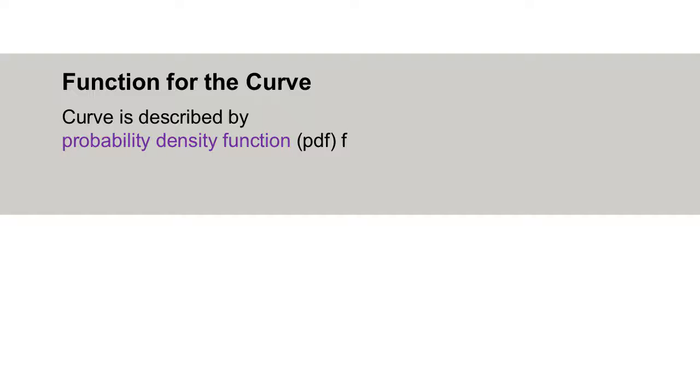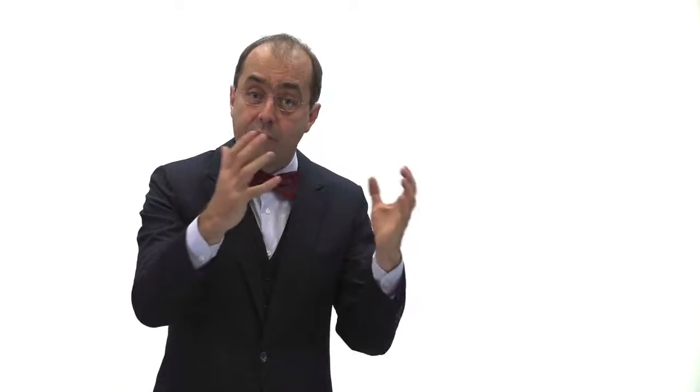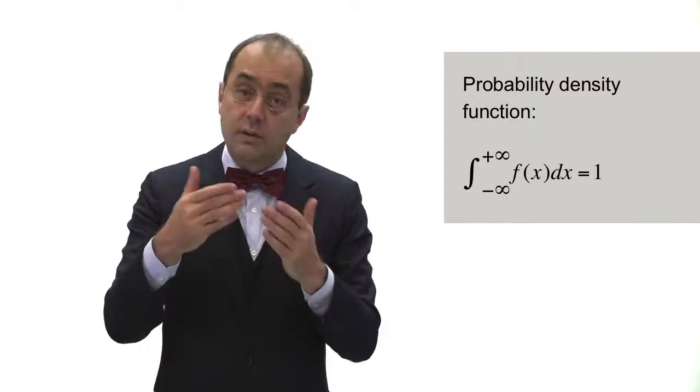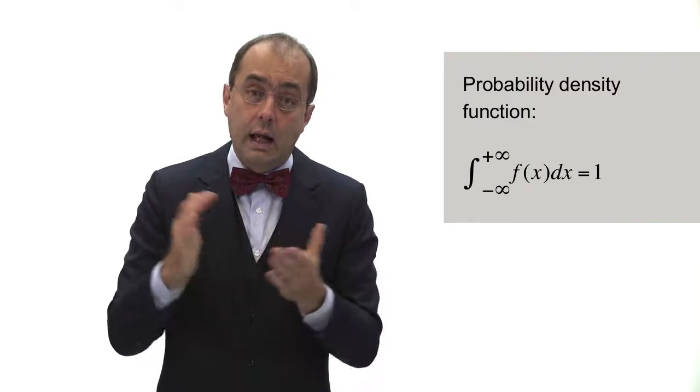This function that we need to describe the curve is called a probability density function, or PDF for short. It has the following properties: the function must be greater than or equal to zero for all elements — we cannot have negative values. And the entire area underneath the curve must equal 1. Why? Think back to the basic rules of probability: the probability of the sample space — everything that's possible — must always equal 1. In technical terms, this means the integral of the entire area equals 1. You can simply think of it as the total area under the graph of the curve being equal to 1.